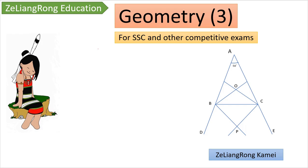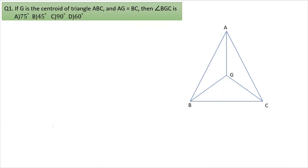Hello everyone, welcome to General Education. Today we're going to discuss the third video of symmetry. In the first question, we have: if Z is the centroid of triangle ABC and AZ equals BC, then find angle BZC.